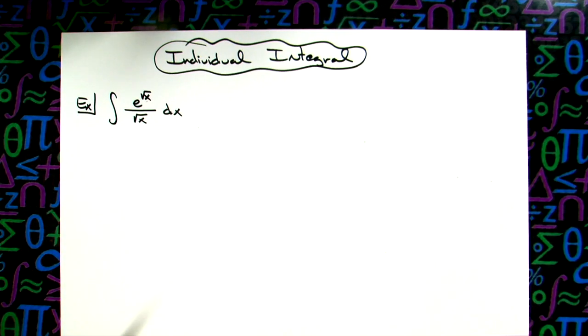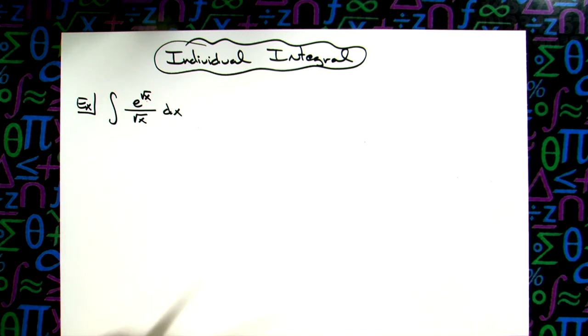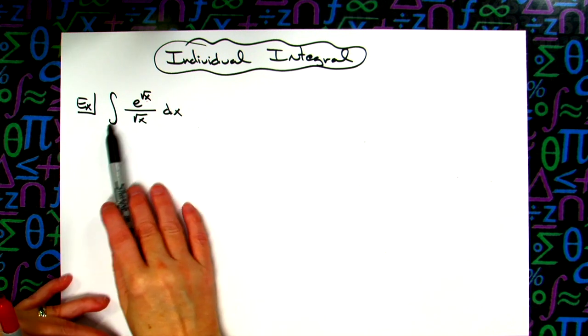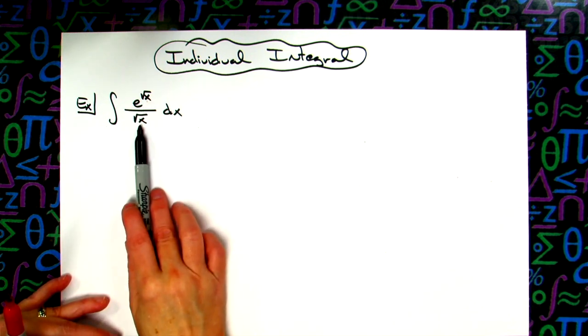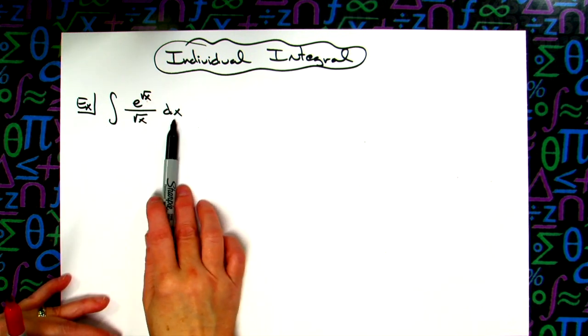In this video, we're going to do an individual integral that's going to be a basic u-substitution integral, typically found in a Calc 1 class. We've got the integral of e raised to the square root of x, all over the square root of x, dx.